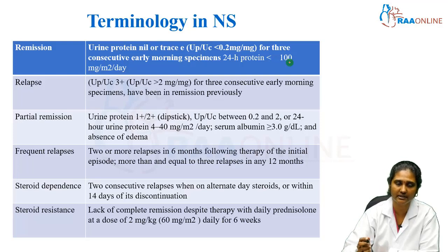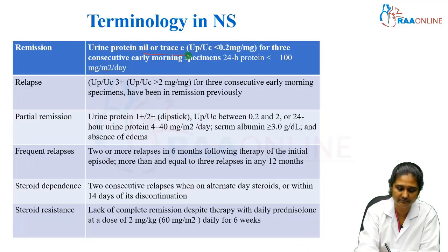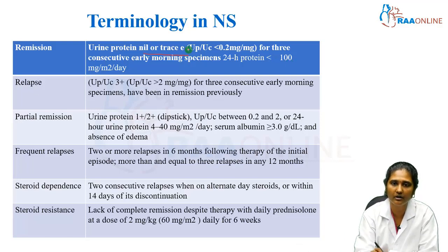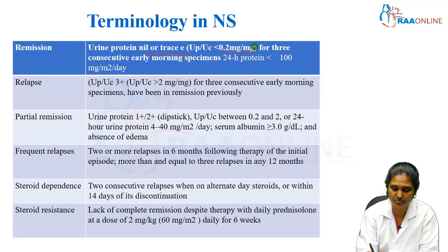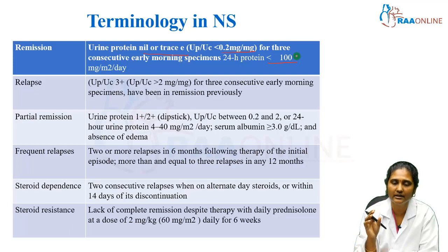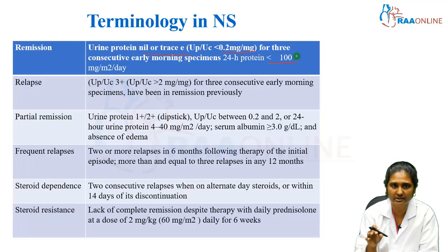Remission is considered when the urine protein is nil or trace, or the protein creatinine ratio should be less than 0.2 milligram per milligram in 3 consecutive early morning samples, or 24-hour urine protein should be less than 100 milligram per meter square per day. These are the values and facts you should remember properly. This is considered to be remission.